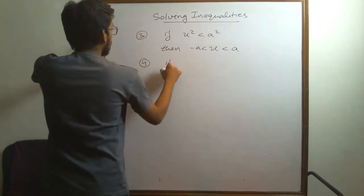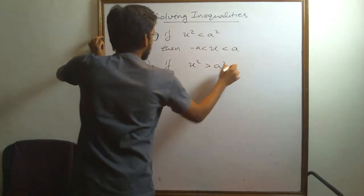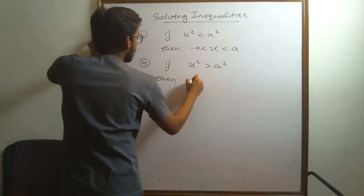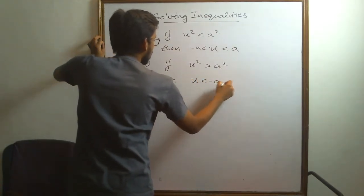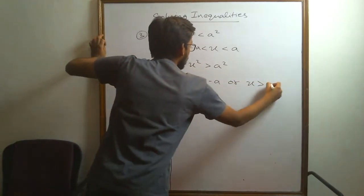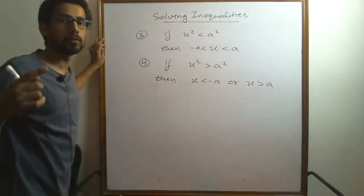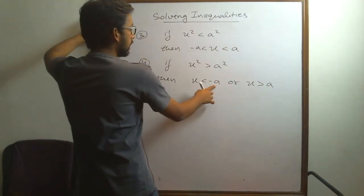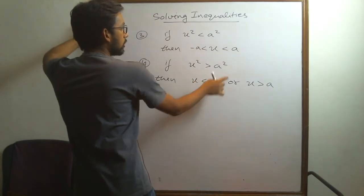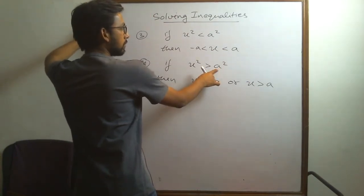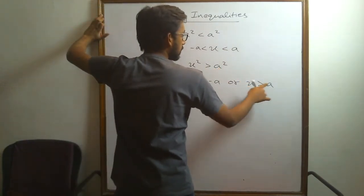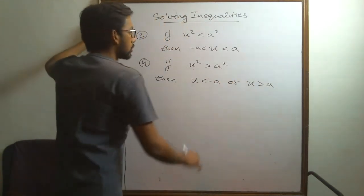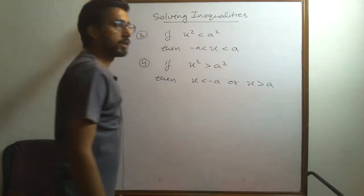Fourth, if x squared is greater than a squared, then either x is less than minus a or x is greater than a. Think about it: if x is less than minus a, the square of that number will of course be greater than a squared. Also if x is greater than a, the square of that number will also be greater than a squared. So this is the solution of this inequality.